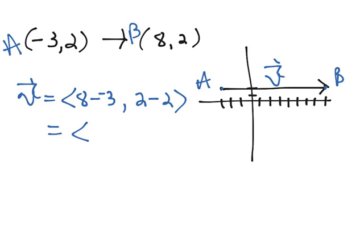And so v in component form, 8 minus negative 3 is going to be 11. So v is vector 11, 0.